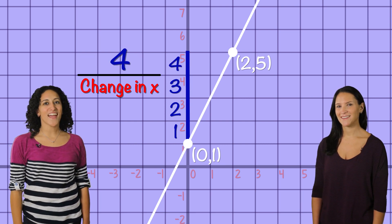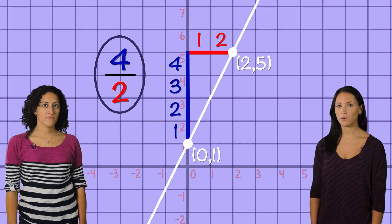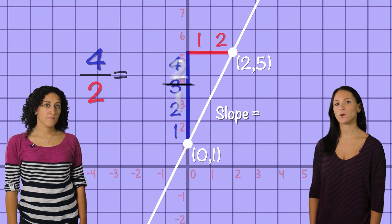Then we curl along the x-axis to find our run. The change in x-value is 1, 2. Now we plug in the numbers 4 over 2, and if we simplify that, we get 2 over 1. And that's it. The slope of this line is 2 over 1.